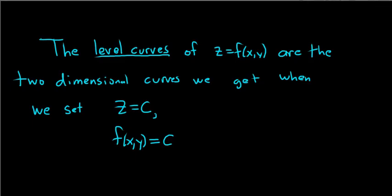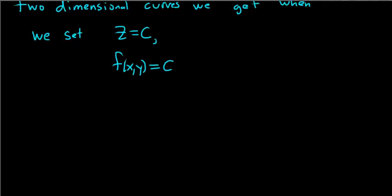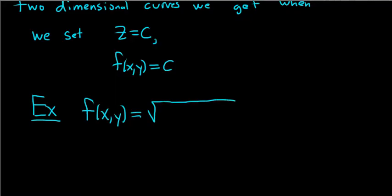Let's go ahead and do several examples of finding level curves right away, so you see how simple this actually is. So 'ex' means example. Let's find the level curves of f(x,y) equal to the square root of 64 minus x squared minus y squared.